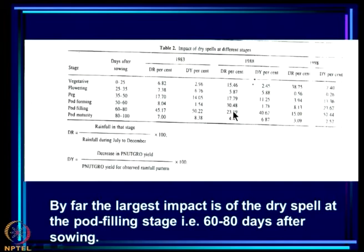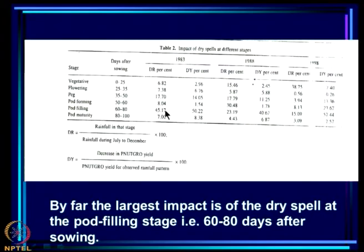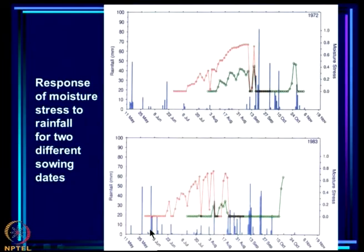Similarly, in other years, only 23% of rainfall was suppressed at pod filling but the yield impact was around 40%, and in 1983 rainfall suppressed was 45% with a 50% yield impact. Across all three years, the impact of a dry spell is far larger at the pod filling stage than at any other stage — the largest impact is of the dry spell at pod filling, 60 to 80 days after sowing.